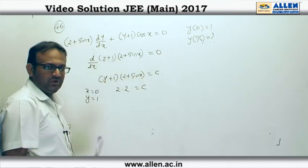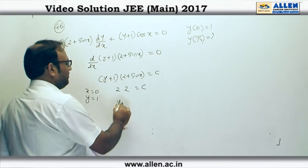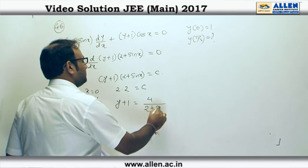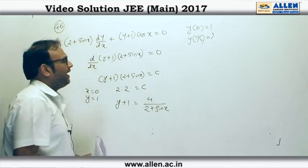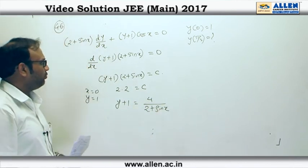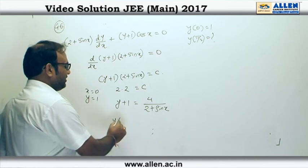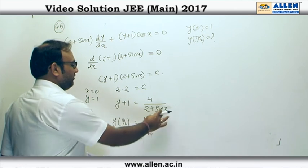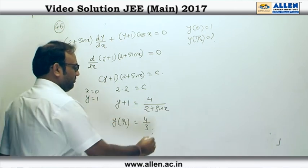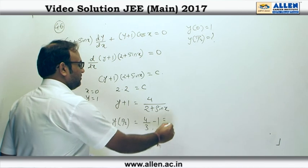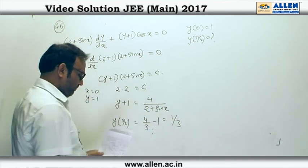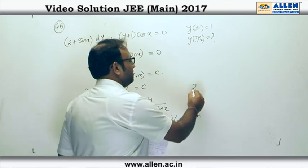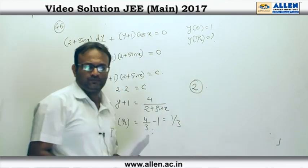So c is 4. From here I can say that y+1 = 4/(2+sin x), and we intend to find y(π/2). So y(π/2), we just put x=π/2 here. So we have here 4/3, x=π/2, sin is 1, minus 1, which gives us 1/3. Now from the options, the correct option is option number 2.